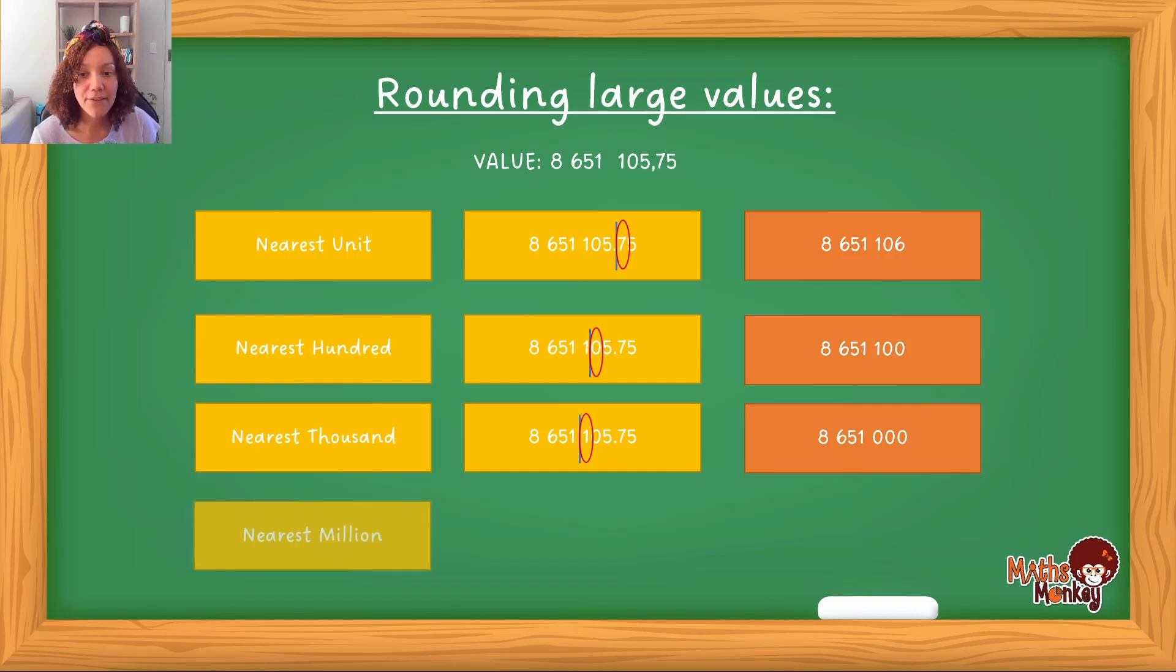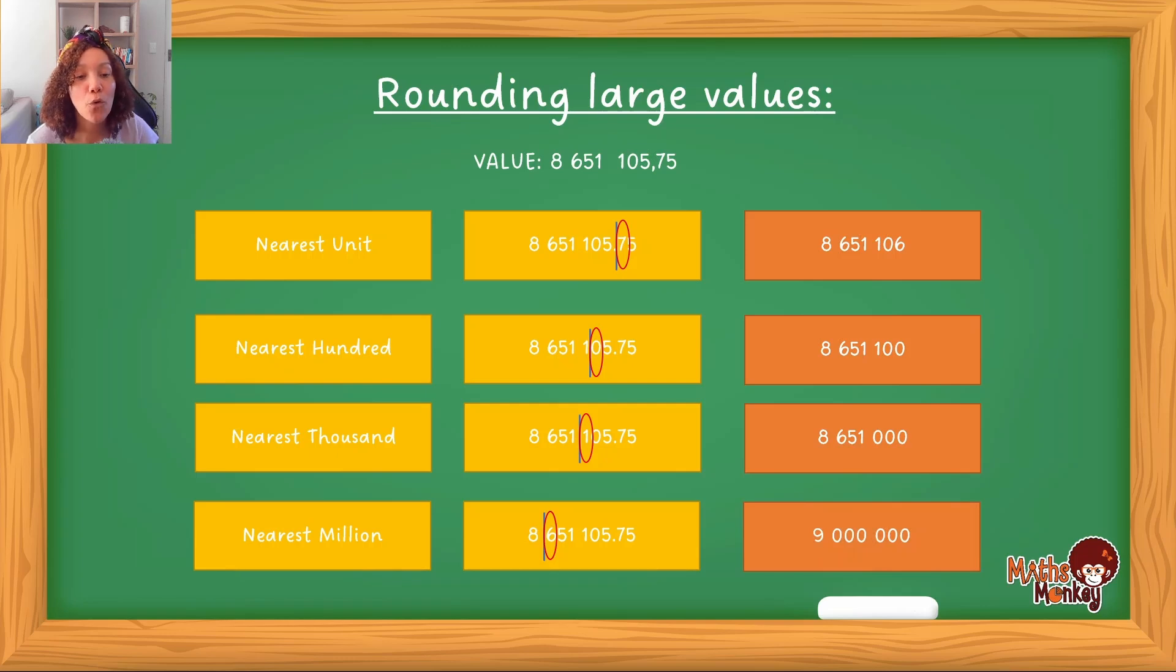If I go to the nearest million now, same number. I say 8 million. I don't even have to say the rest of the number, because I've said million, and that's where I'm going to draw my line. The number after this is greater than 5, which means that the 8 would move up to a 9, and then all the rest of the placeholders, I will fill with zeros. So that's how you would round off larger values if they ask you to do so.